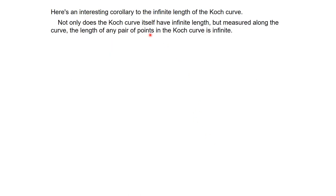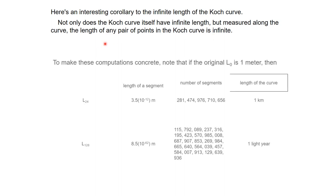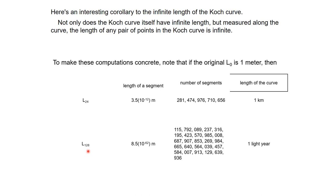Not only that, but the length between any pair of points within the Koch curve is also infinite. To give a realistic example: if the original length is one meter, then at the 24th level the total length of the curve is one kilometer — one kilometer within that one meter. At the 128th level, the total length would be one light year, while the total extent of the Koch curve remains one meter.